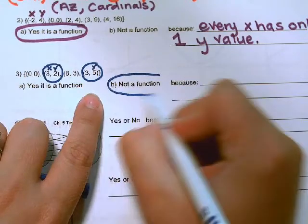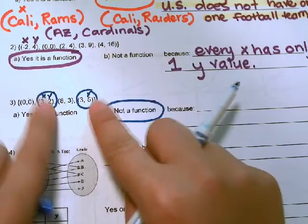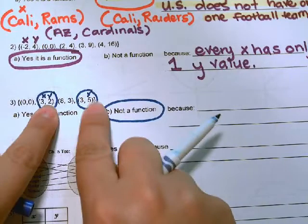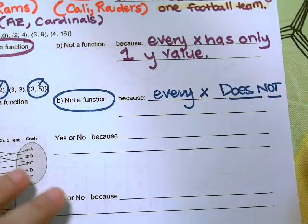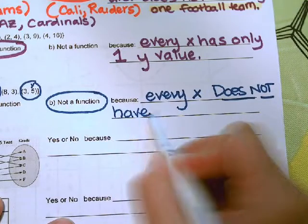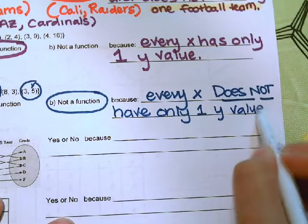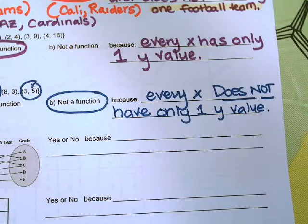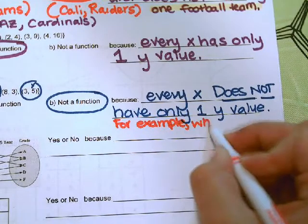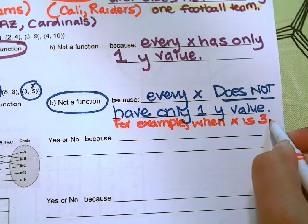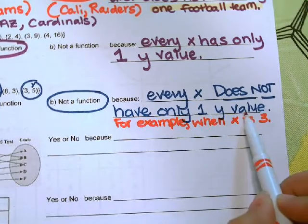That means this is not a function. It's just like our example up here. If 3 is California, then it has two different teams. It has two different numbers. So we would say not a function because every X does not have only one Y value. We could leave it at that or we could put, for example, when X is 3, it has two different Y values. We could also write every input does not have only one output. That would also work.